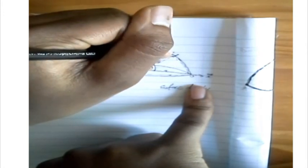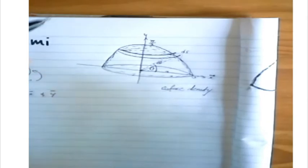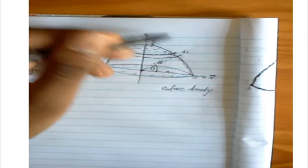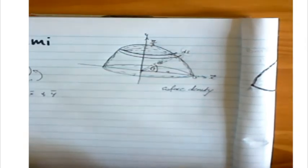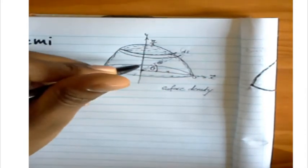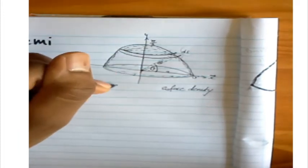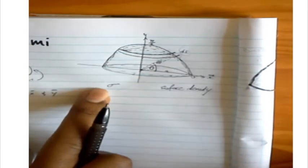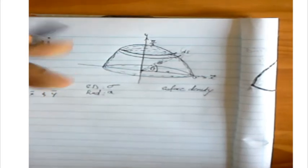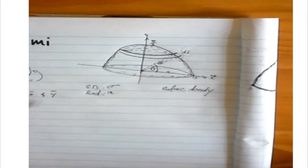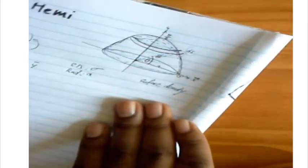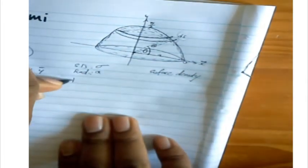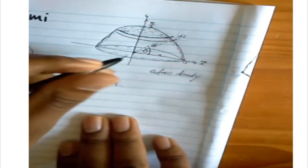We let ds be the width of our slice. We are told that the radius is a and we have a surface density. An important observation is that ds equals the radius times dθ, because this is like an arc length. So ds = a dθ.